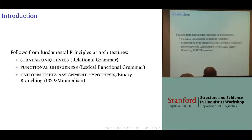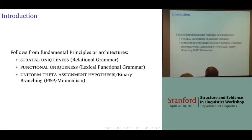Back in relational grammar, there was strato-uniqueness. Lexical-functional grammar had functional uniqueness. And then in principles and parameters and minimalism, it doesn't follow from a single principle, but it seems to be an emergent property of the UTAH and also binary branching.